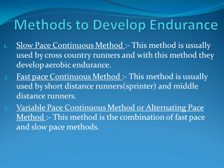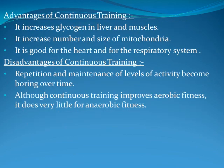Number three, variable pace continuous method, or alternating pace method — this method is a combination of fast pace and slow pace methods. Advantages of continuous training: it increases glycogen in the liver and muscles, increases the number and size of mitochondria, and is good for the heart and respiratory system.